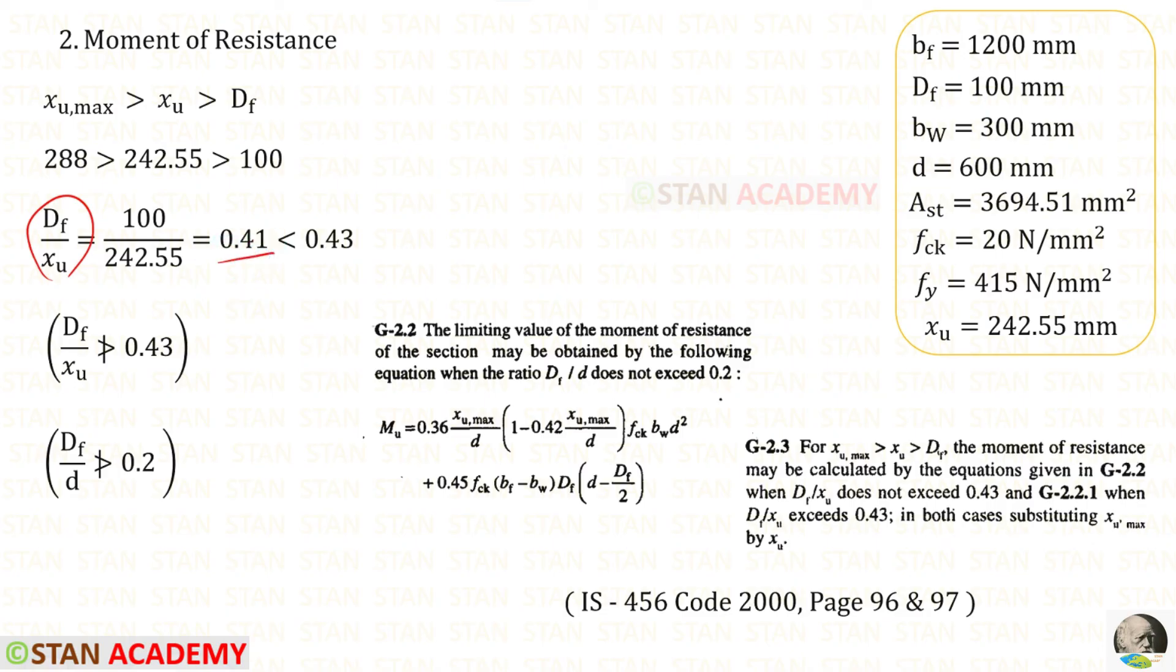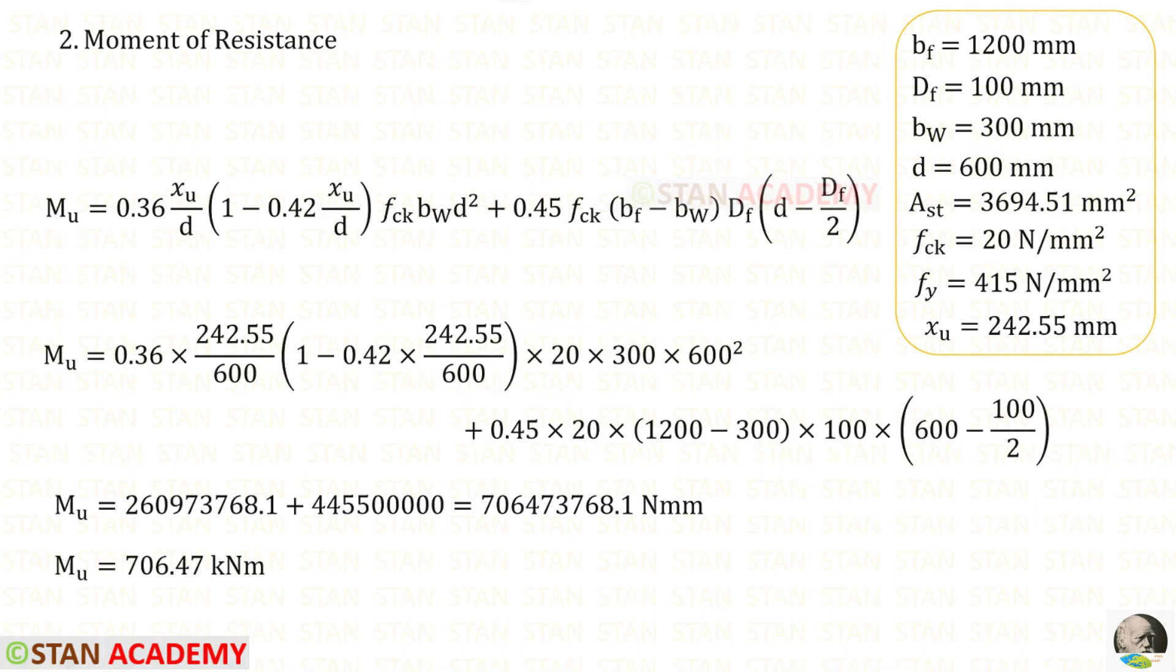So our assumption is correct - df/xu does not exceed 0.43. In this case we have to use the equation given in G2.2. But in the equation we have to substitute xu,max by xu. So instead of xu,max, we have to apply xu here. You can see that instead of xu,max I have applied xu in the equation.